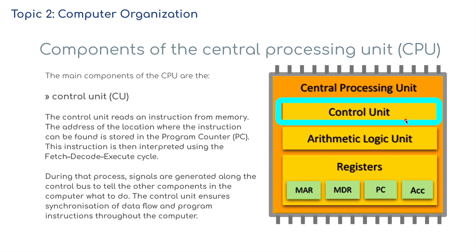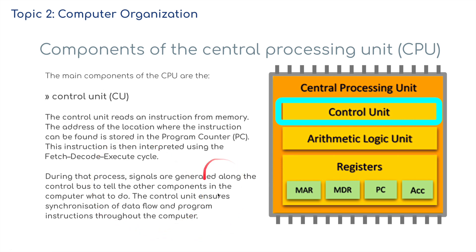The control unit reads an instruction from memory. The address of the location where the instruction can be found is stored in the program counter (PC). This instruction is then interpreted using the fetch-decode-execute cycle. During that process, signals are generated along the control bus to tell the other components in the computer what to do. The control unit ensures synchronization of data flow and program instructions throughout the computer.